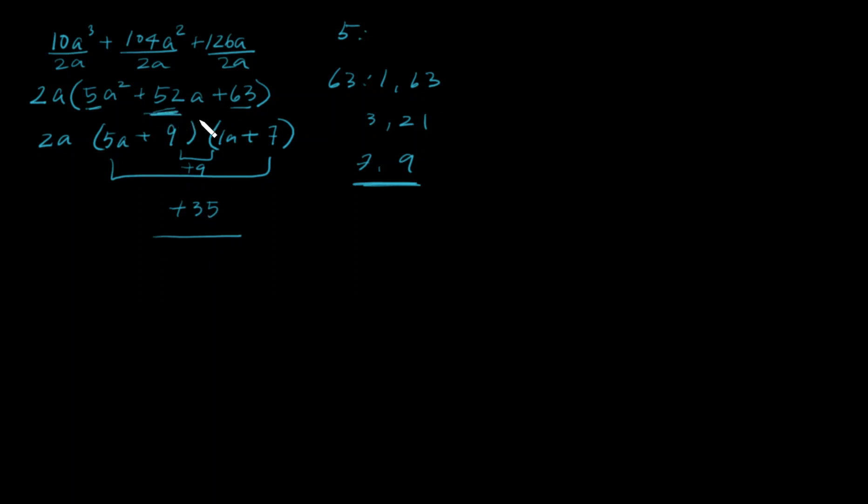Nope, I need to get to 52, so let's try the other way. 5a + 7 and 1a + 9. Outer, that is 45.